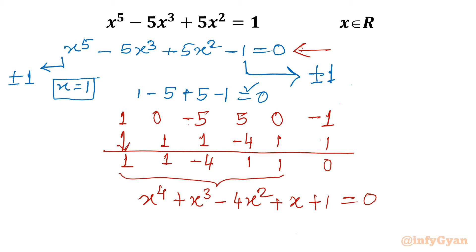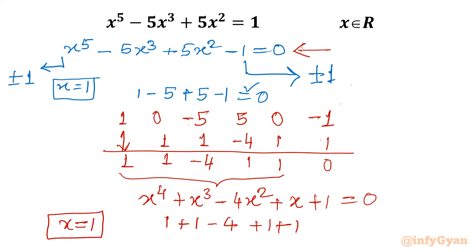Without applying the rational root theorem again, notice that if I add all the coefficients of this quartic equation — 1 plus 1 minus 4 plus 1 plus 1 — I get 0. So x equals 1 is again a solution of this quartic equation, which means we have x equals 1 with multiplicity 2 so far.